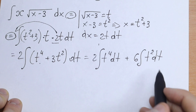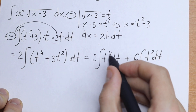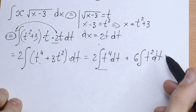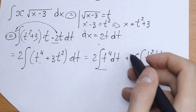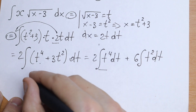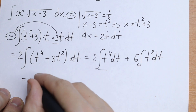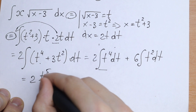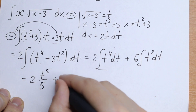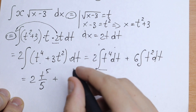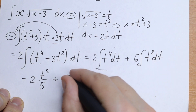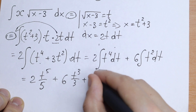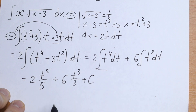Now let's find the integral of each term. This is a classic table integral — just like integrating a power of x but with t. The result is 2 times t to the fifth power divided by 5, plus 6 times t to the third power divided by 3, plus C.